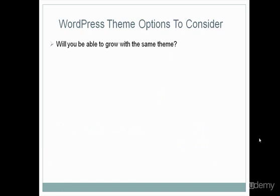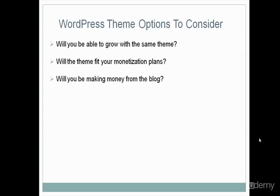There are several things to consider when choosing a theme. Will you be able to grow with the same theme? You don't really need to start off with a very elaborate theme to get going — a very basic generic theme works fine. Will the theme fit your monetization plans? For example, if you're trying to build a list or place Google AdSense in a nice location, you'd want a WordPress theme that has a right sidebar. Will you be making money from the blog? You need to determine whether your blog theme gives off a professional, clean image. It doesn't have to look perfect — Google and Amazon aren't extremely flashy, but they get the job done. You can have clean-looking professional sites that make money.